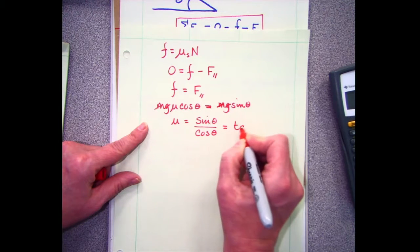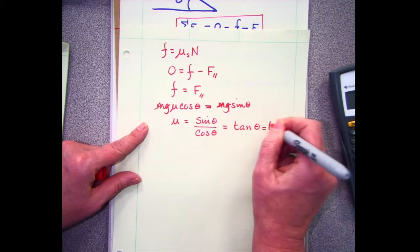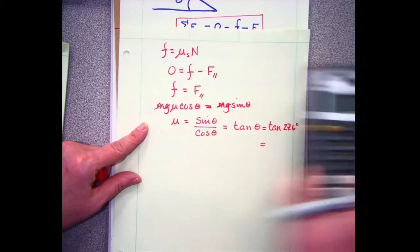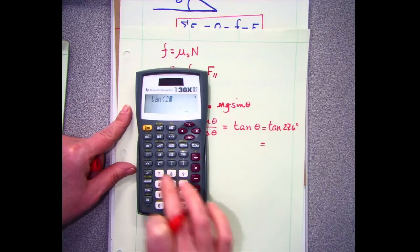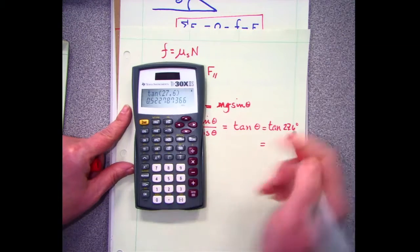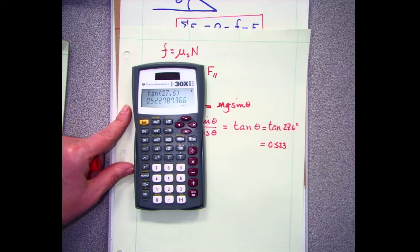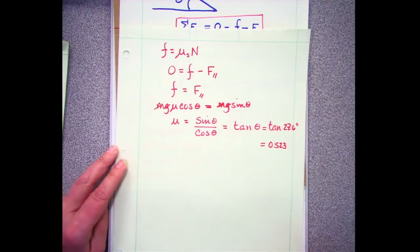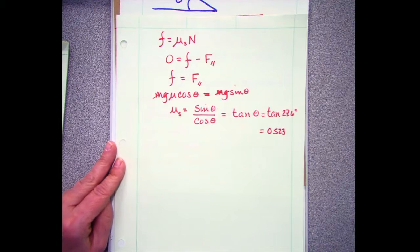That's tangent of the angle — tangent of 27.6 degrees. When I plug that into the calculator, I get 0.523. It's unitless — it's a coefficient. And this is static friction.